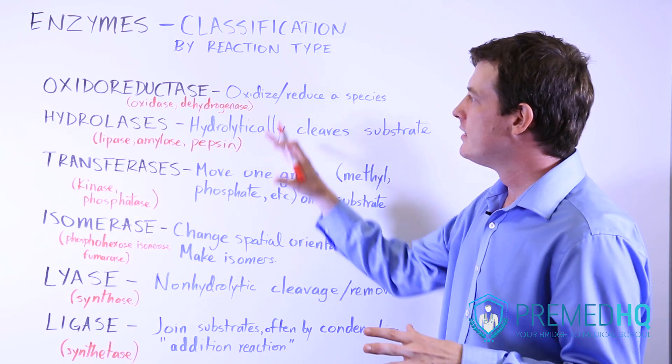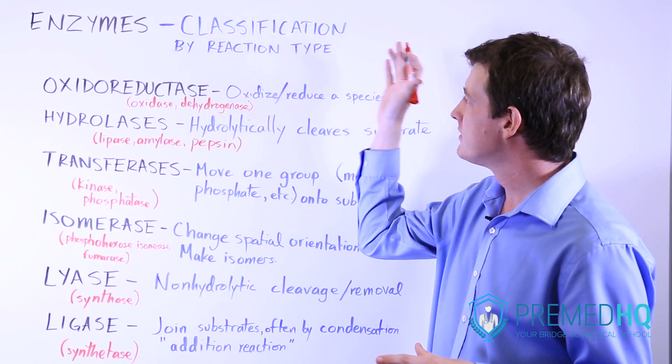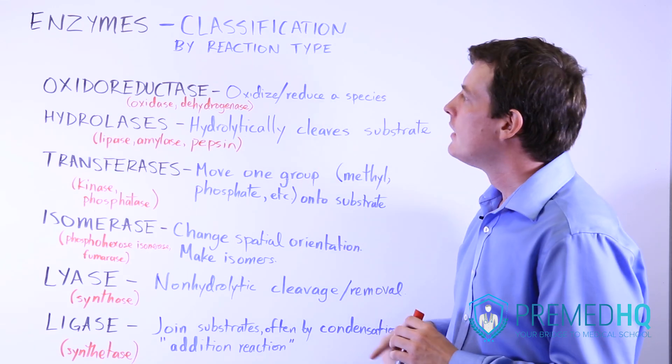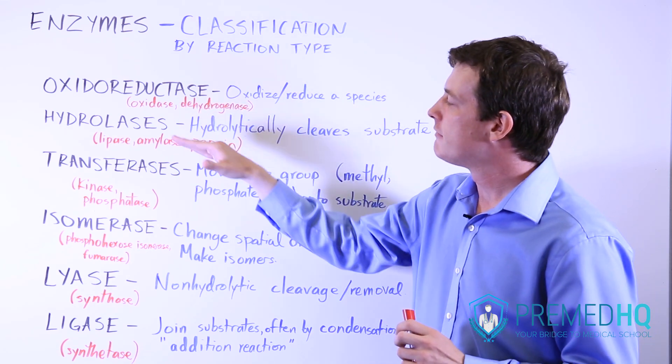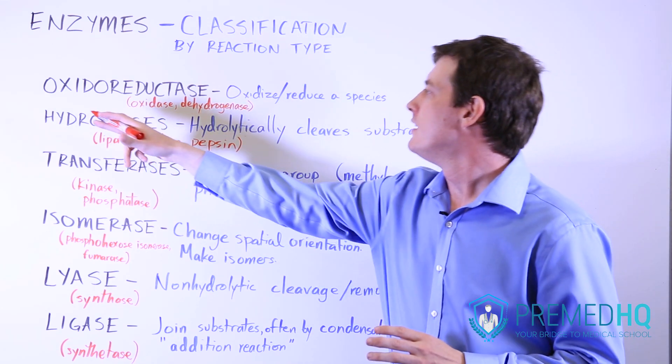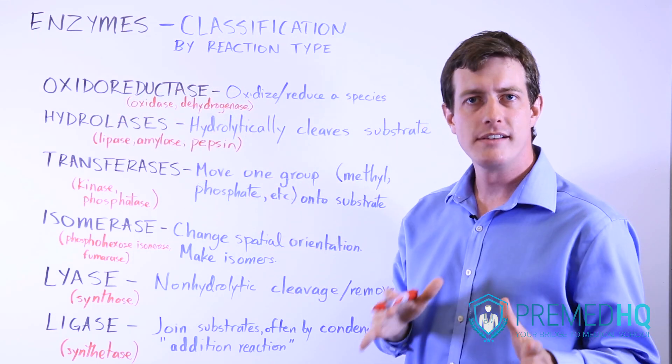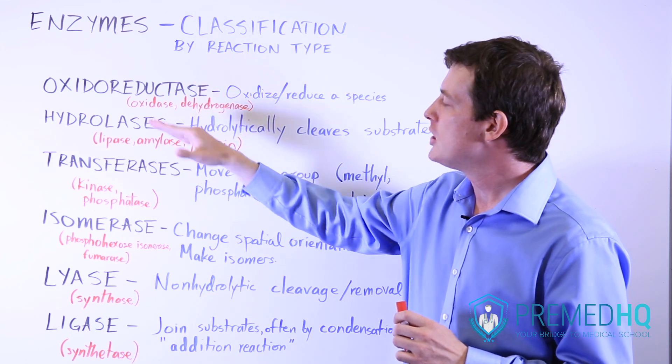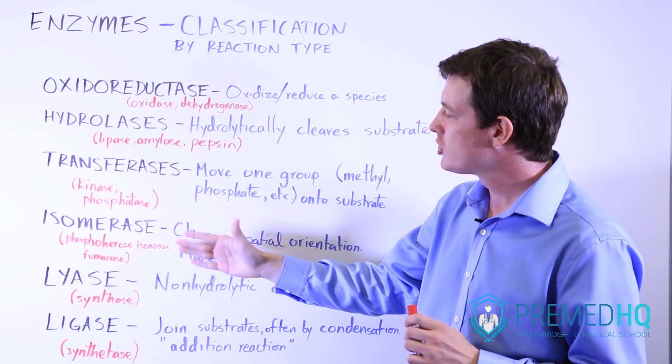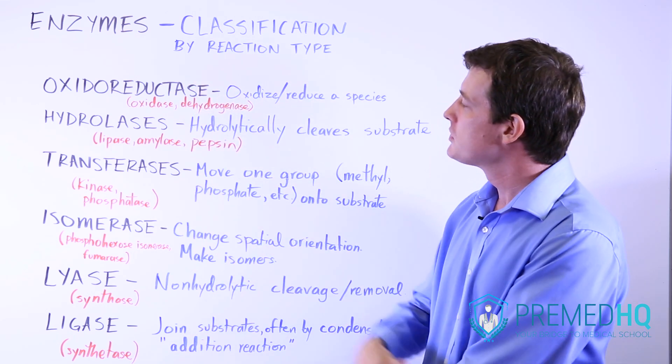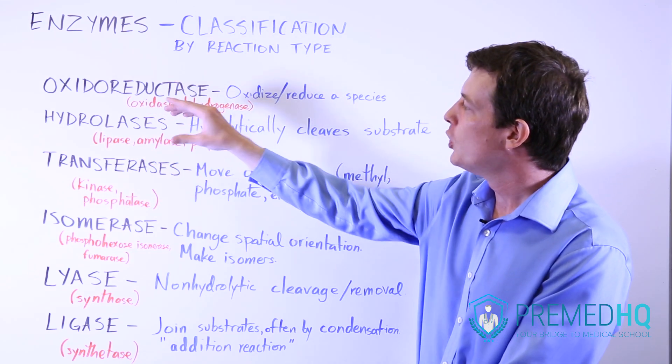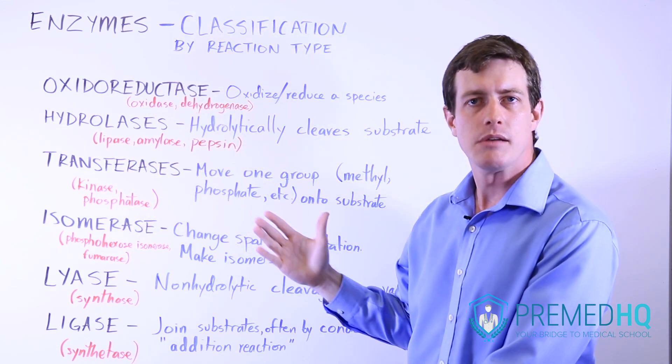Now we'll go through the different ways you can classify enzymes by the type of reaction that they facilitate. A lot of these are fairly straightforward. The name tells you a lot about what type of reaction is being catalyzed by those enzymes. These are the major classifications that you might be in charge of recognizing. We'll go through them one by one to talk about how you can know that you're working with one type of enzyme over another.